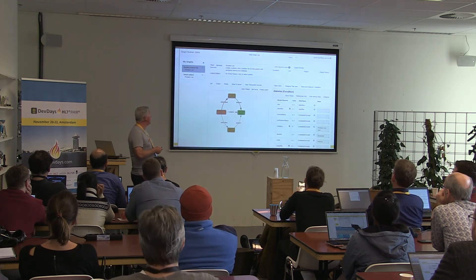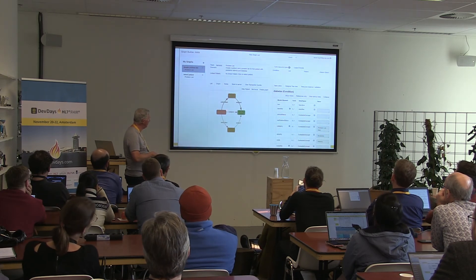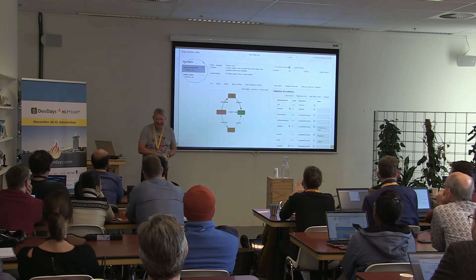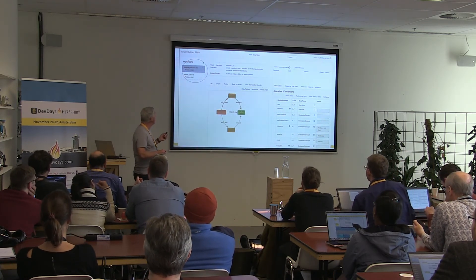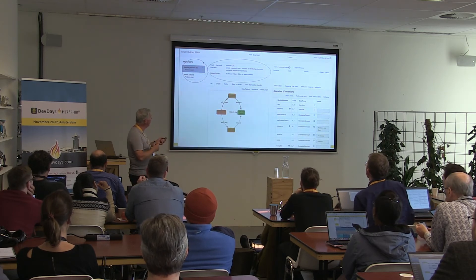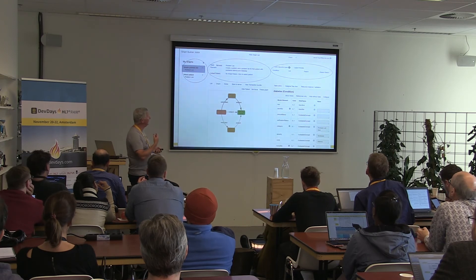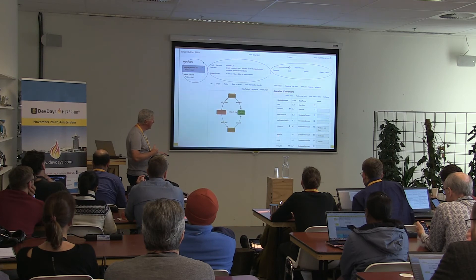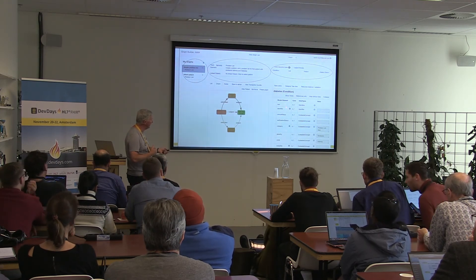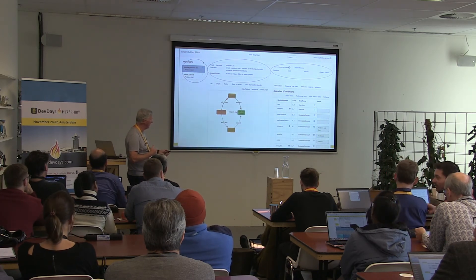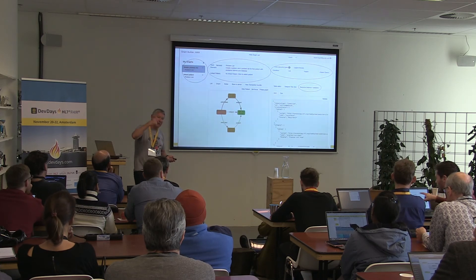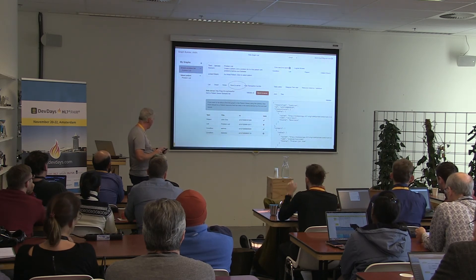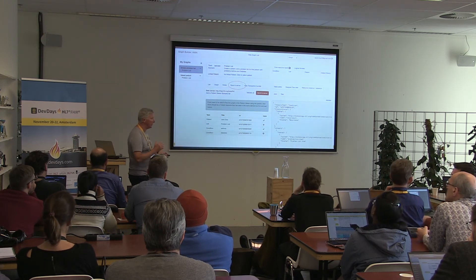Here is a picture of the Graph Builder showing a fairly simple graph — a problem list linking to conditions. This shows the list of graphs, the servers, the resource selector. Here is the list of elements inside a particular resource — in this case a Condition resource — and you can see the CodeableConcept representing verification status. This is all built automatically through a graphical interface. You can then save the resources up to a FHIR server.